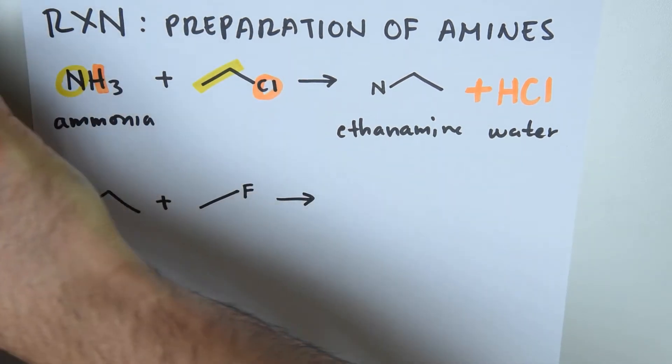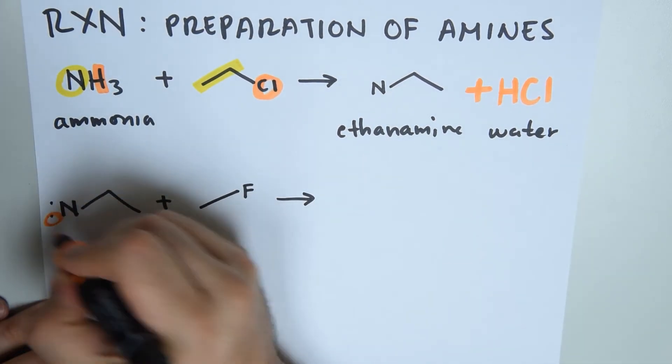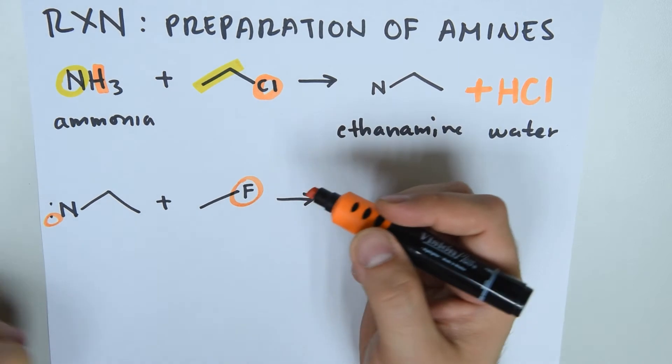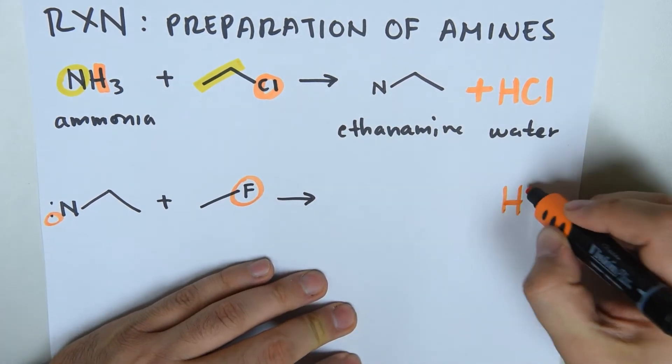So when we make it react, let's first make our acid. Our acid comes from one of those hydrogen molecules that are implicit here and the fluorine. So we get hydrofluoric acid.